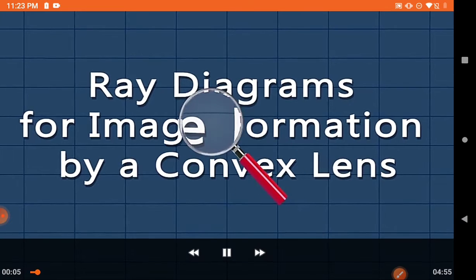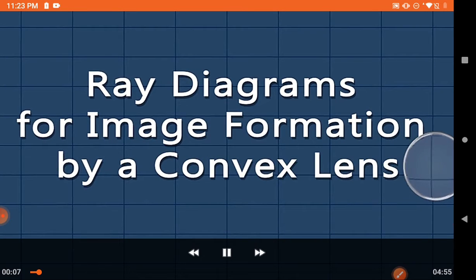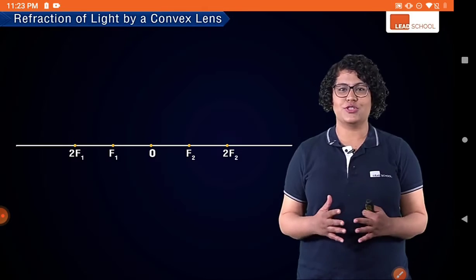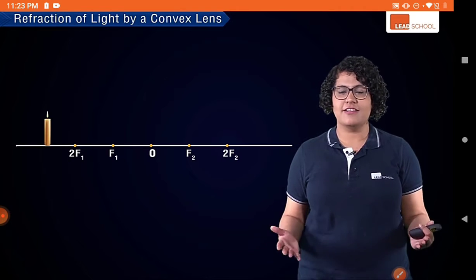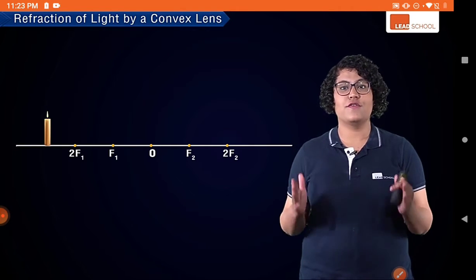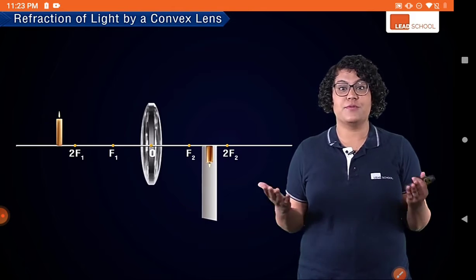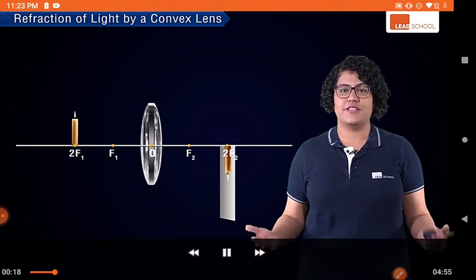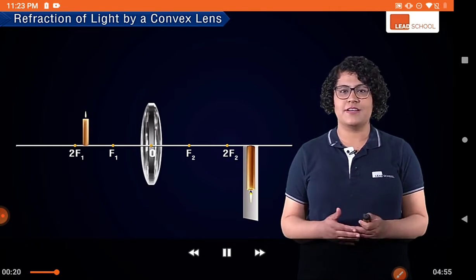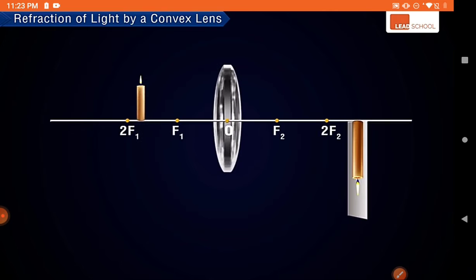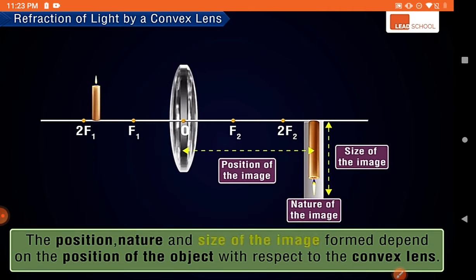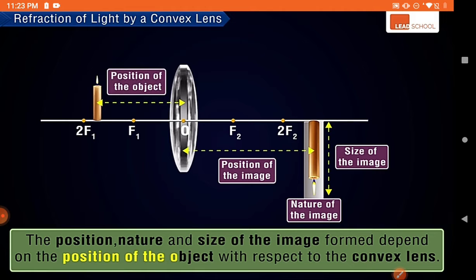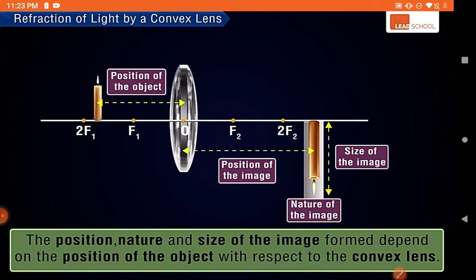First we study image formation by a convex lens. When we place an object such as a candle in front of a convex lens at different positions, images of different sizes and nature are formed. The position, nature, and size of the image formed by a convex lens depend on the position of the object placed in front of it.